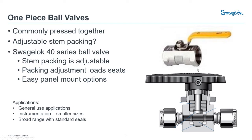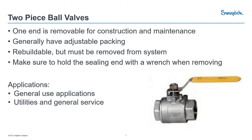From one-piece, we move into the two-piece ball valve. One nice thing is most of the body is solid in one piece, with the exception of one end that unthreads. You can see a seam where that piece can be loosened and removed — that's how construction happens. You load the ball and seals in on that side and adjust to get the correct preload on your packing. This allows you to rebuild that valve, though you have to isolate and physically remove it from your system to take that end cap off.